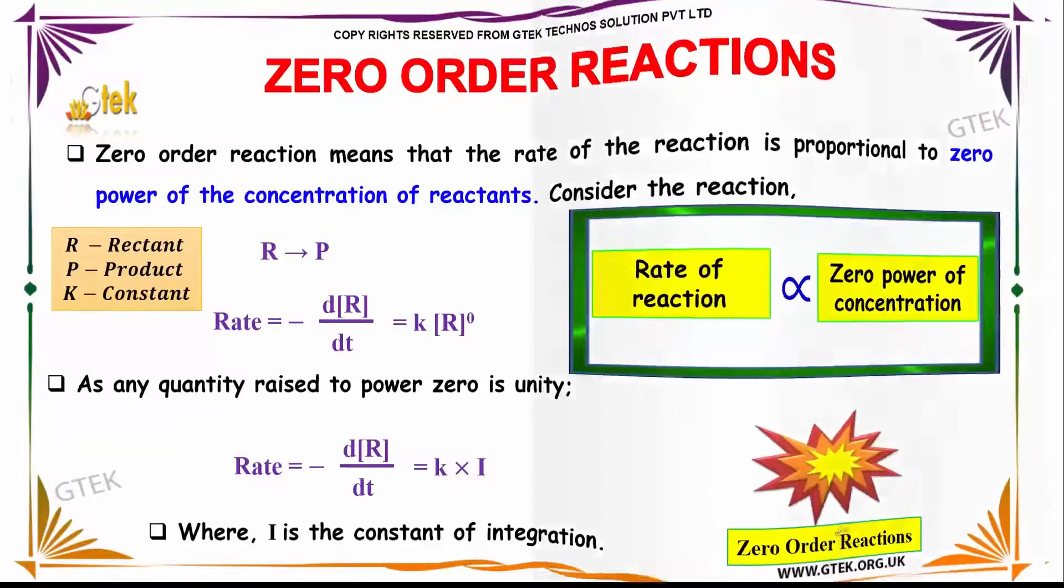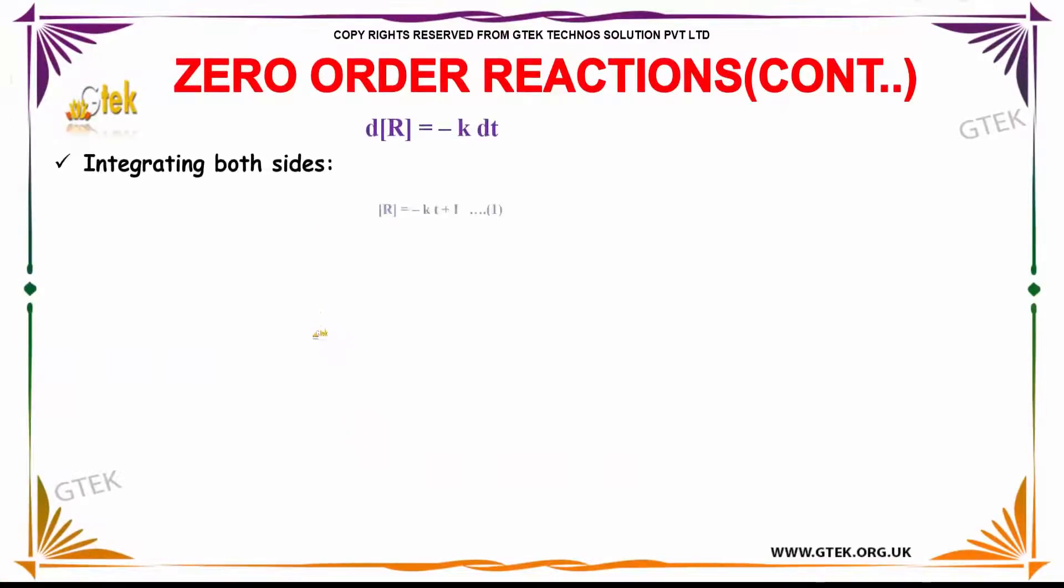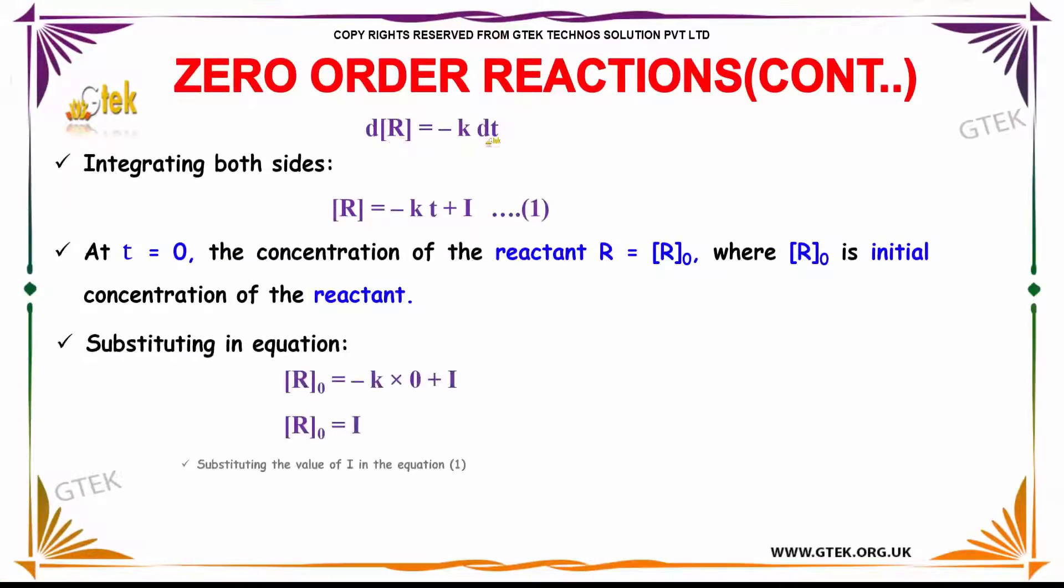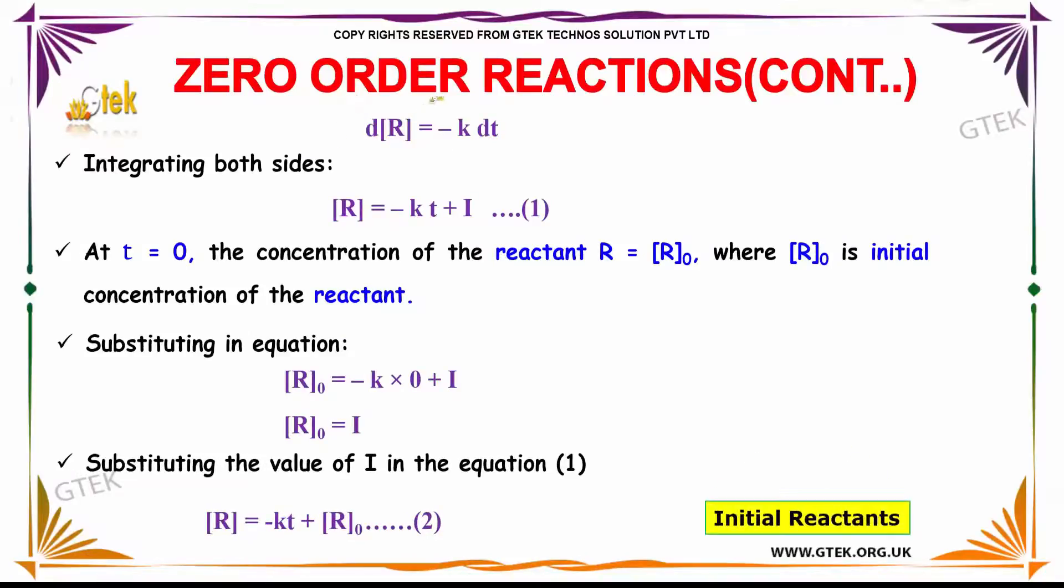So d[R] is equal to minus k into dt. Integrating both sides, you'll be getting R is equal to minus kt plus I. At t equals zero, the concentration of the reactant R is R naught, where R naught is the initial concentration of the reactant. Substituting this in the equation, you get R naught is equal to minus k into zero plus I, which indicates R naught equals I. So substituting the value of R naught equals I in equation one, you get R is equal to minus kt plus R naught.